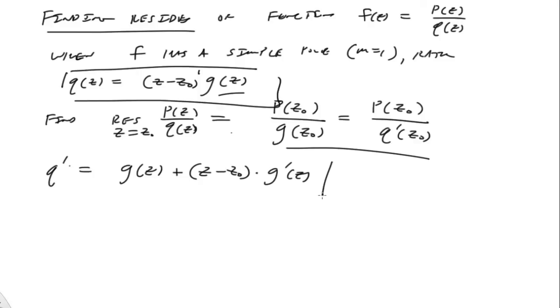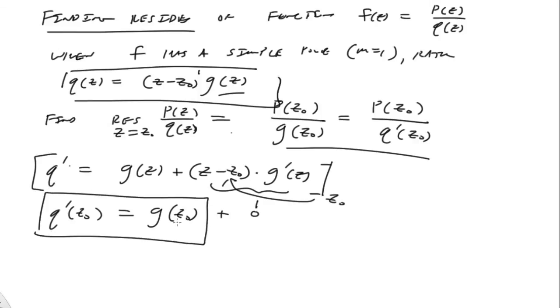Now, if I take this whole thing and evaluate it at z-naught, of course I get q prime at z-naught is equal to g at z-naught, but when I put in the z-naught into here, of course this whole thing becomes zero, so we find q prime is equal to g when it's evaluated at z-naught only. It could differ otherwise.